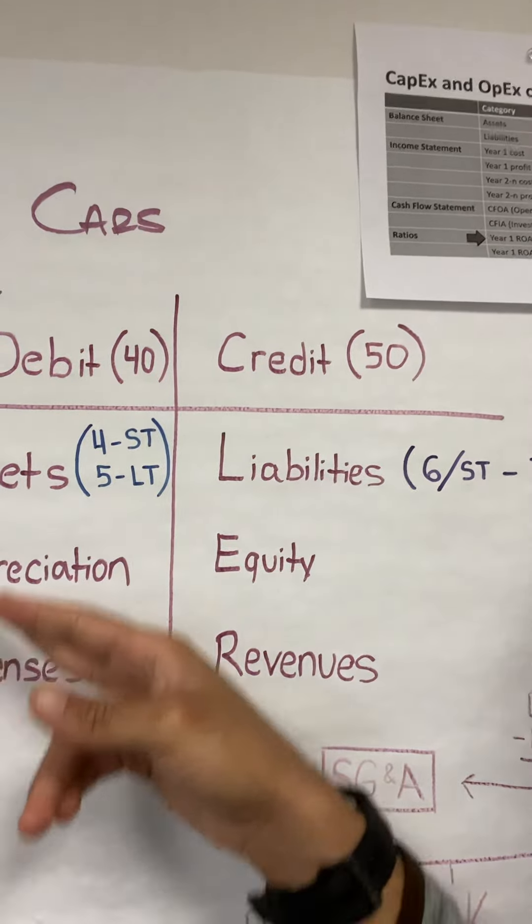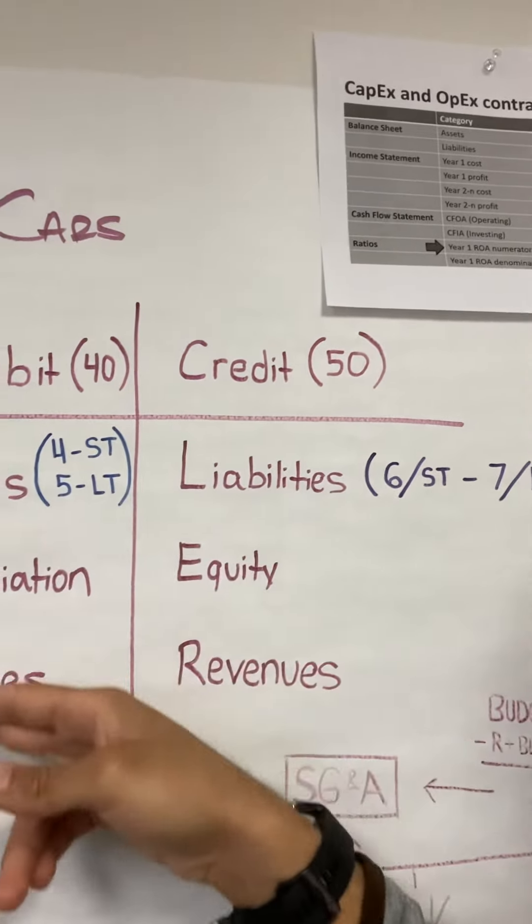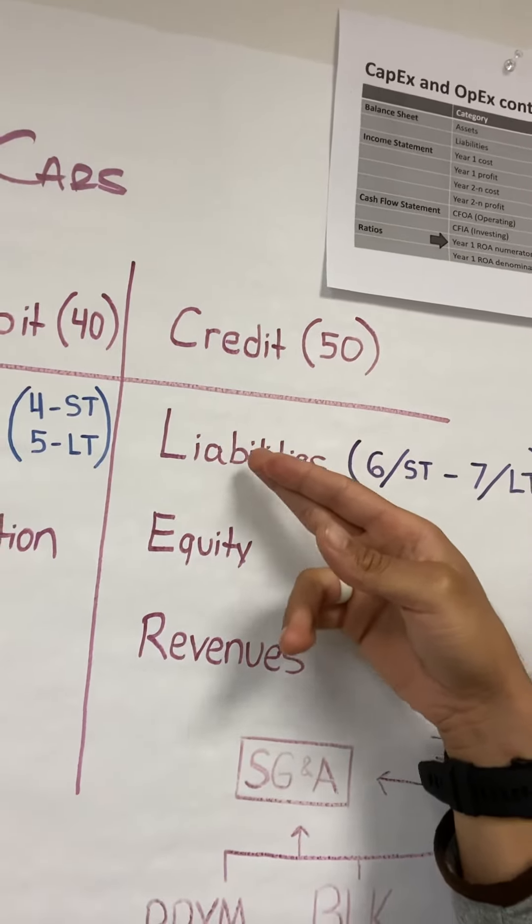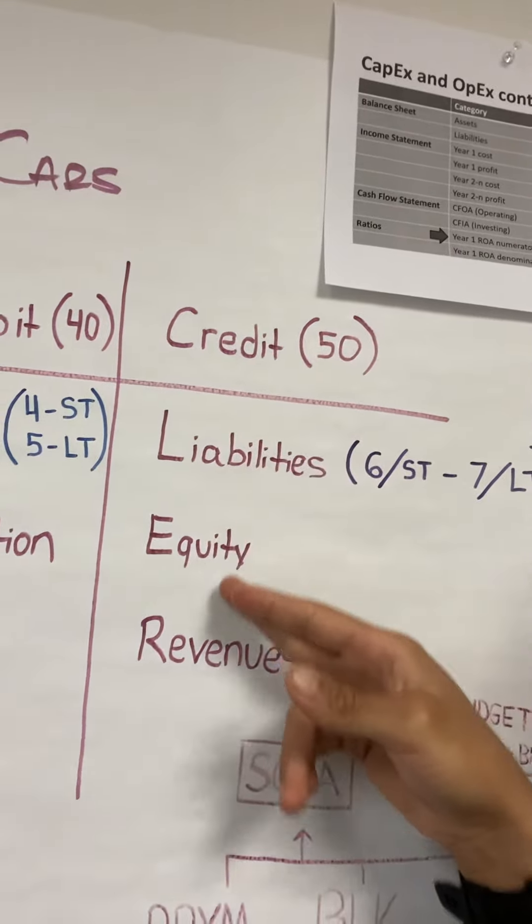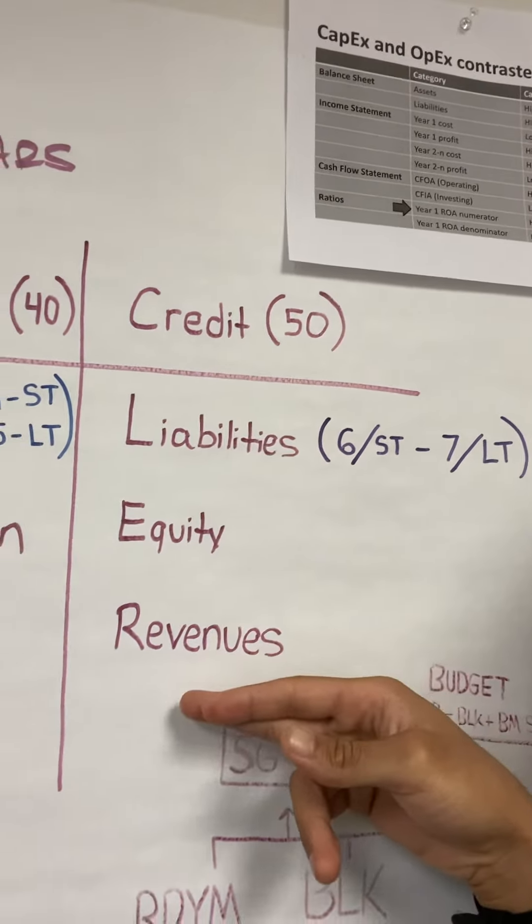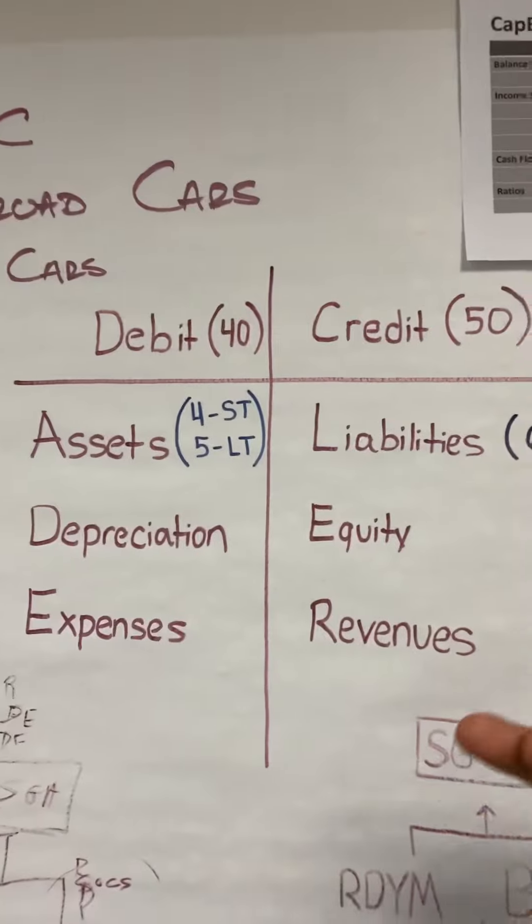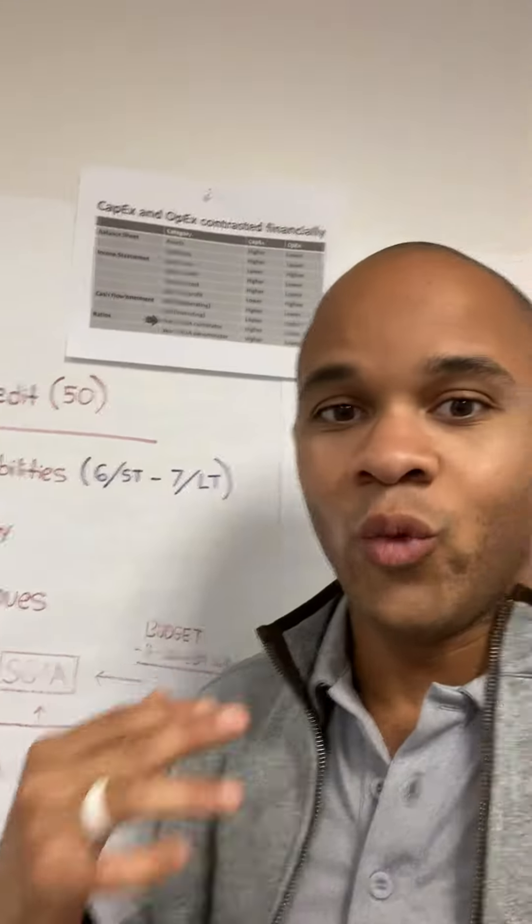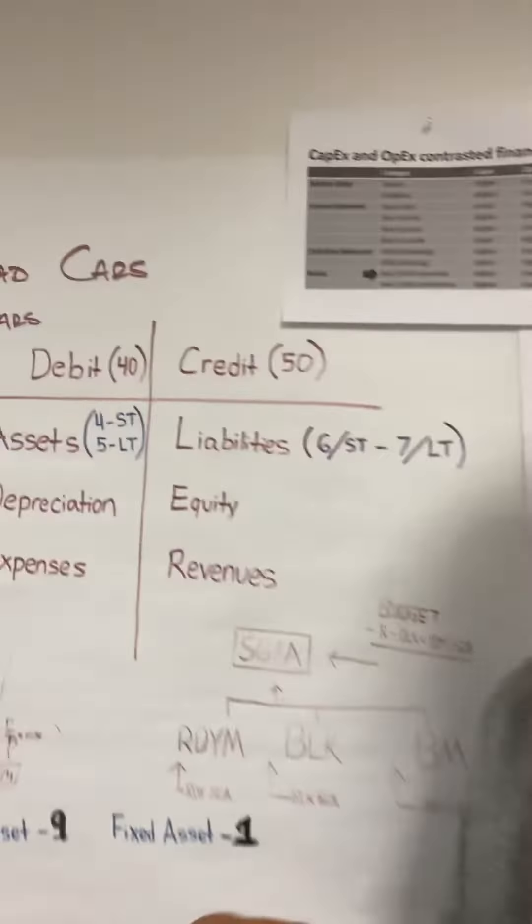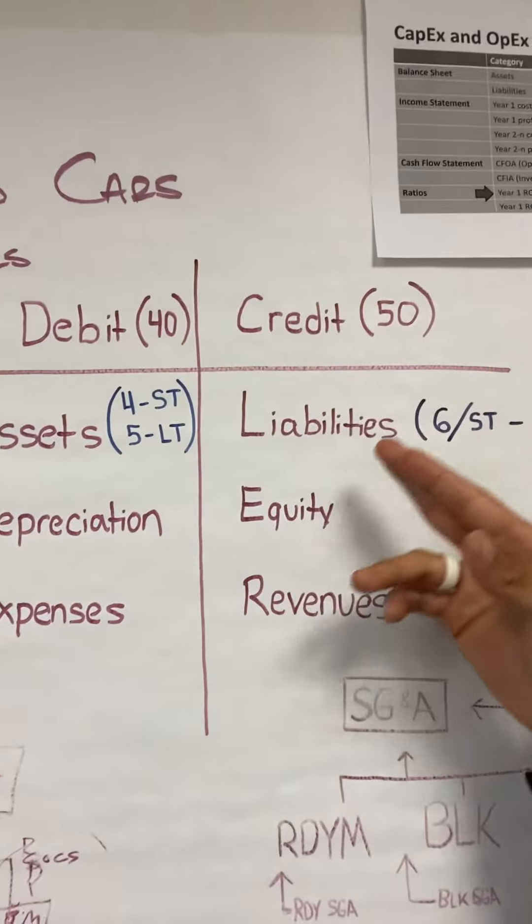Credits, on the other hand, have LURE: liabilities, equities, and revenues. These increase when you credit them but decrease when you debit them. And the simple concept that really opened my eyes when it comes to homework is that a credit is almost always a source.